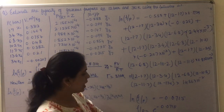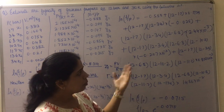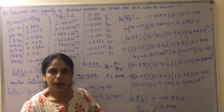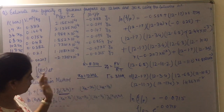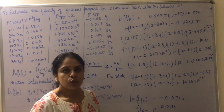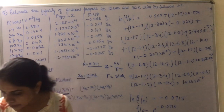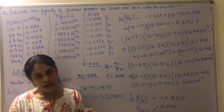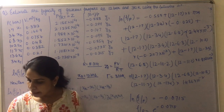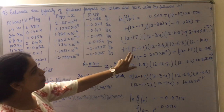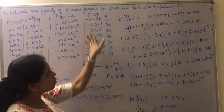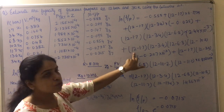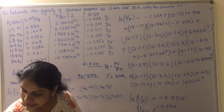So the fugacity is 11.17 bar. If you take more decimal places you will get a more accurate result; this is an approximate result. You can use this method to find fugacity. The question also asks to compute the fugacity of propane at 310 Kelvin and 70 bar. To do that, replace 12 bar with 70 bar everywhere; the rest of the values remain the same.